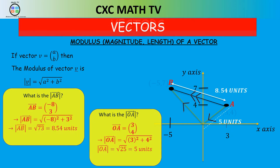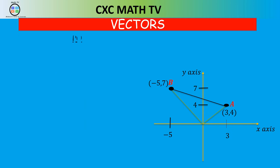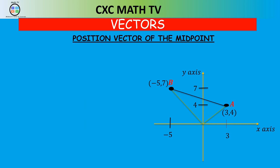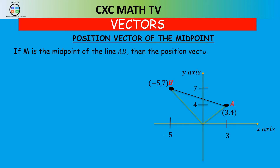The next thing we're going to look at is the position vector of the midpoint. If M is the midpoint of line AB, then the position vector of M is: vector OM = ½(vector OA + vector OB). To find the midpoint of a vector, it's going to be a half of OA plus OB.